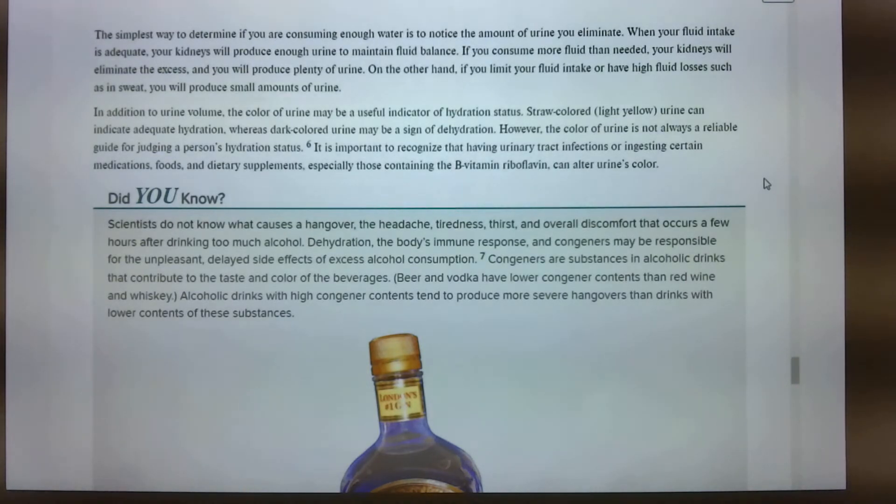The book goes into some light yellow straw-colored urine can indicate adequate hydration. A dark colored urine may be a sign of dehydration. It is important to recognize that having urinary tract infections or ingesting certain medications, foods, and dietary supplements, especially those containing B-vitamin riboflavin can alter urine's color. How many of you eat asparagus? How many of you ever noticed how soon it takes for even the smell and the color to change after you eat asparagus? Yeah, it makes your pee stink. Yeah, it does. I mean, yes, it does. And almost immediately. Like, it doesn't take, it's just one of those things. So I mean, that obviously doesn't mean there's anything wrong with you, but we know that if we're eating asparagus, that those things impact our urine. Alcohol is also a diuretic.